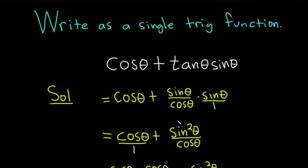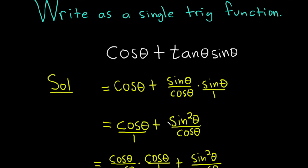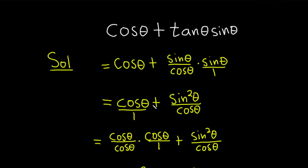The only thing you can really do is write tangent as sine over cosine, and then going from there you multiply. And then when you get here, there's not much you can do except add. So to perform the addition, we multiply by one in a clever way.